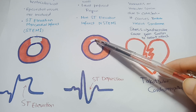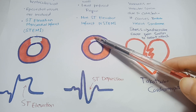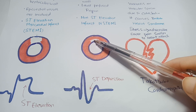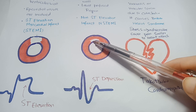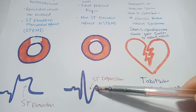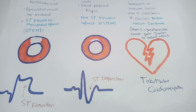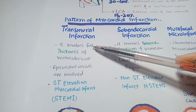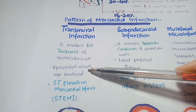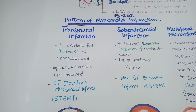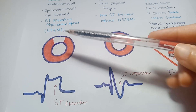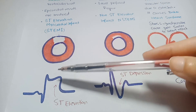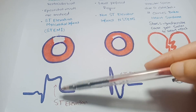As shown in this figure, when the endocardium of the heart is involved, it results in subendocardial infarction, and the patient's ECG presents with ST depression. Transmural infarction involves the full thickness of the ventricular wall, and usually epicardial vessels are involved. On ECG, transmural infarction represents ST elevation.